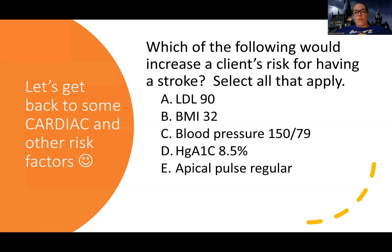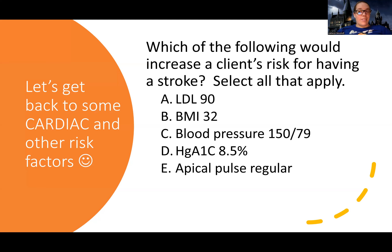Blood pressure 150 over 79: we said a stroke is decreased flow or bleeding in the brain leading to brain cell death. Would blood pressure being on the high end — which means vasoconstriction — affect flow to the brain? Yes. Hypertension is actually probably the biggest risk factor for stroke.